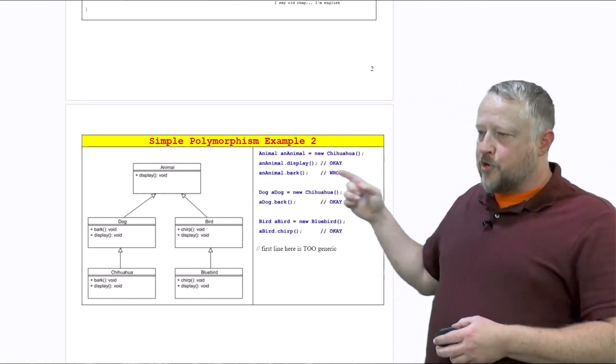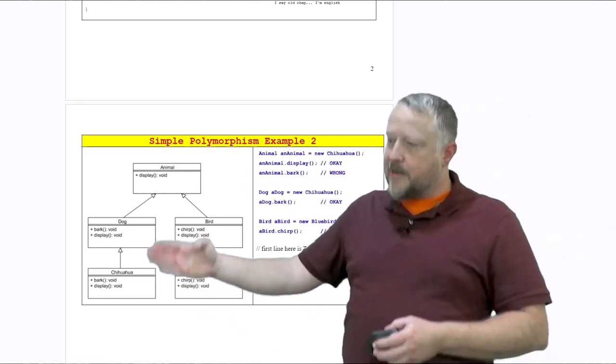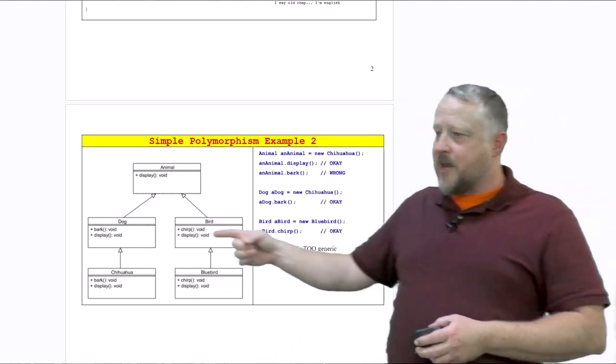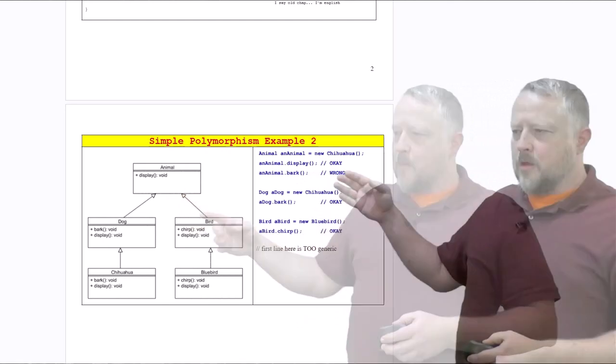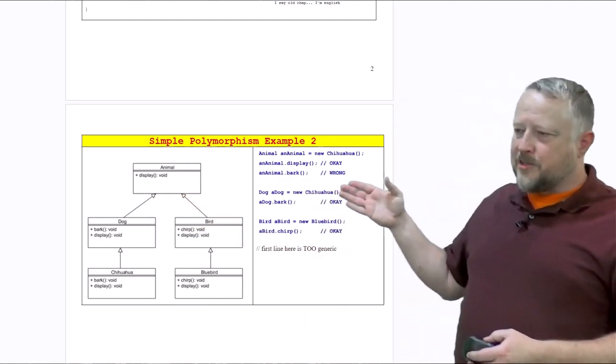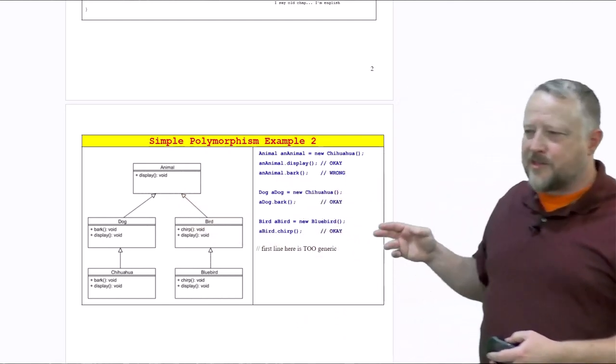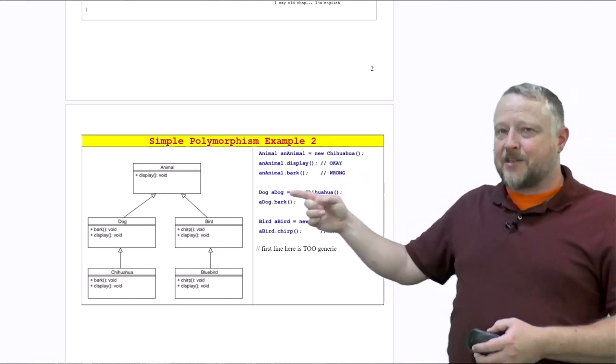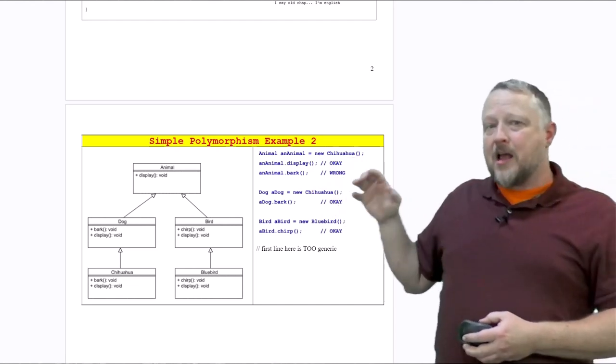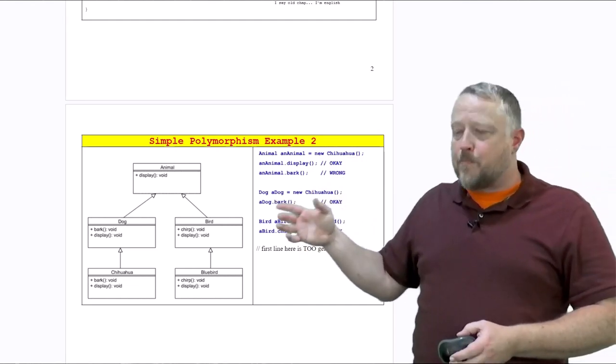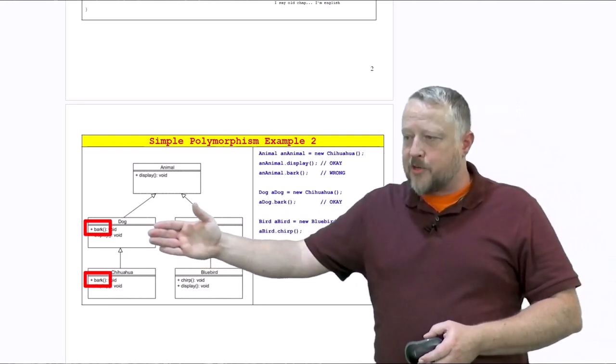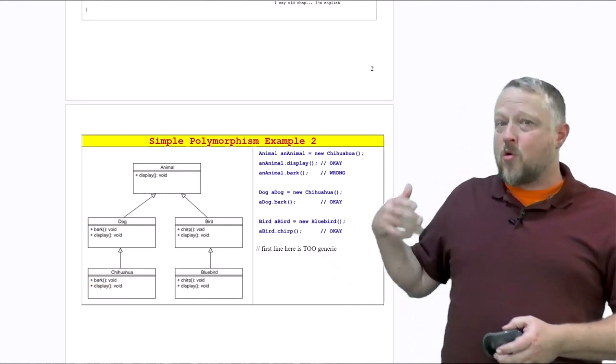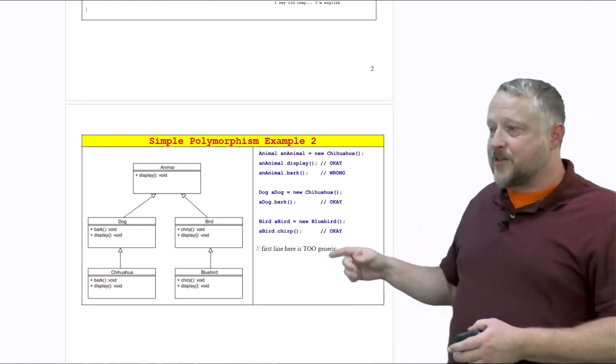We have animal and animal equals new Chihuahua. Chihuahua is part of an animal so that's how we can get away with that. We have animal.display - that's okay because we have a display here. Then we have animal.bark. Notice it says wrong here and the bad part is that that first line is just too generic. I'm going to have to cast this eventually into Chihuahua just to let me know exactly where do I want the bark coming from, because you'll notice I've got it in a couple different aspects here. That's going to be an issue that we have to talk about.